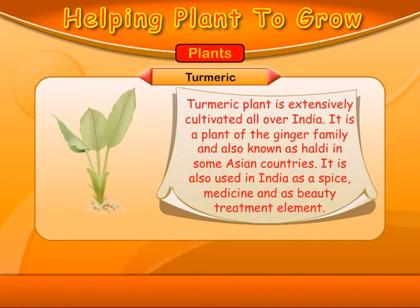Turmeric. The turmeric plant is extensively cultivated all over India. It is a plant of the ginger family and also known by other names in some Asian countries. It is also used in India as a spice, medicine, and as a beauty treatment element.